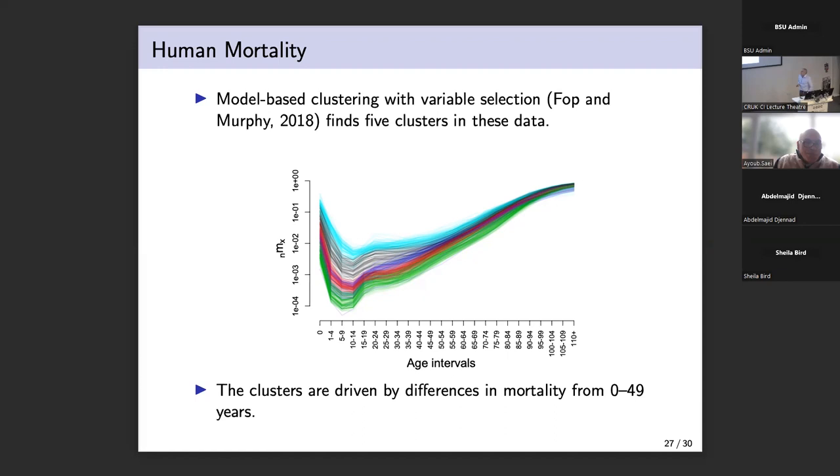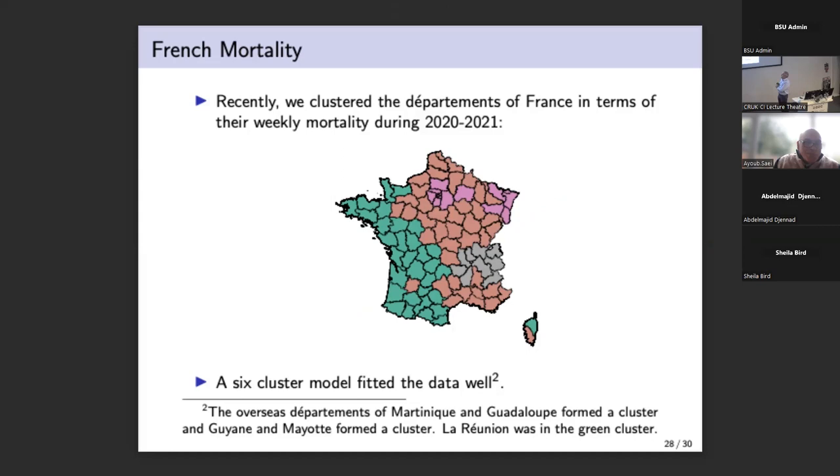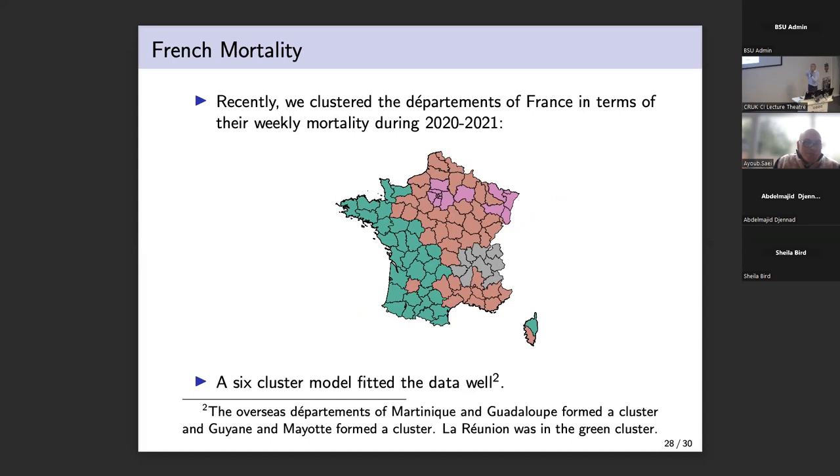More recently, when I was on sabbatical last year in France, we were looking at all cause mortality in the different departments in France in the first two years of the pandemic compared to prior to the pandemic. And we found that when you cluster the mortality experience during the pandemic in France, we got six clusters. The departments in France fell into six different clusters. Now you may ask, but your map only has four clusters in it. France has a number of overseas departments. So Martinique and Guadeloupe ended up in a cluster on their own and Guyane and Mayotte ended up in a cluster on their own. Reunion actually ended up in the green cluster.